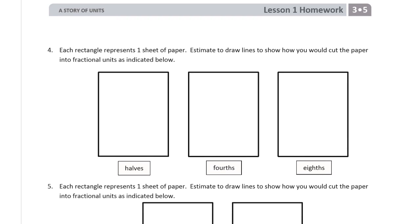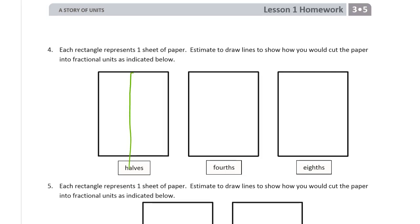Each rectangle represents one sheet of paper. Estimate to draw lines to show how you would cut the paper into fractional units as indicated below. So here we need halves for this piece of paper, so there. Try to get it right down the middle. I mean, I couldn't get it exactly down the middle, but do the best you can. Fourths. I could do this. That's one, two, three, four equal parts.